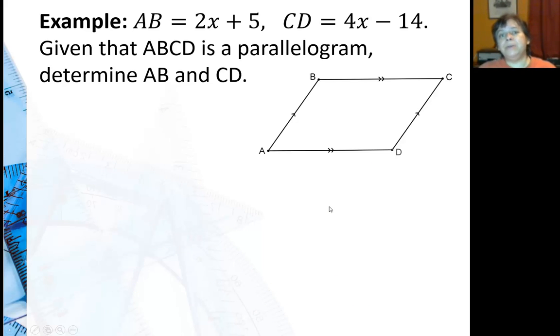So the main way you're going to be using this theorem is to solve for lengths of opposite sides. So here I'm saying AB is 2x plus 5 and CD is 4x minus 14. Well if this is a parallelogram, what must be true for these two? Well AB and CD are opposite sides. They must be congruent so their values must be equal. So I set the values equal and solve for x.